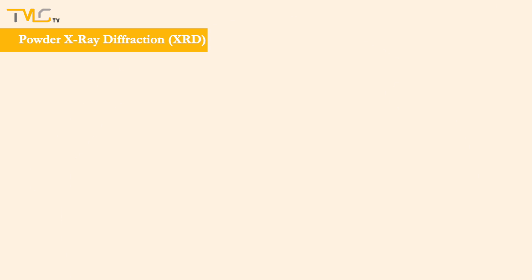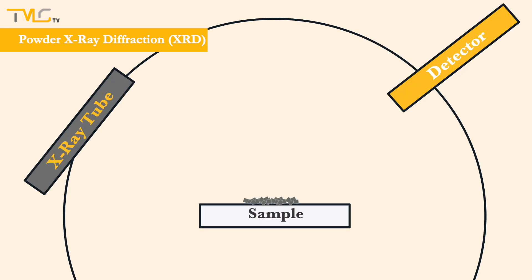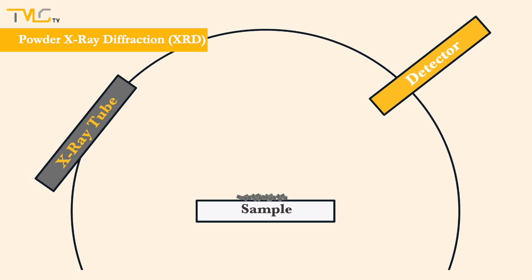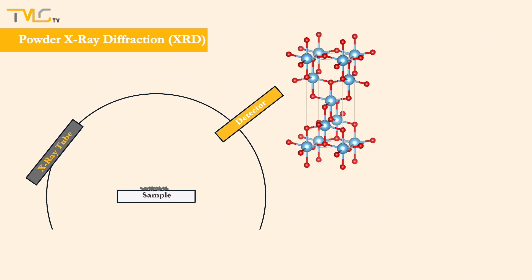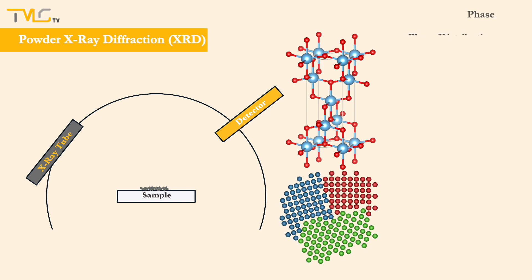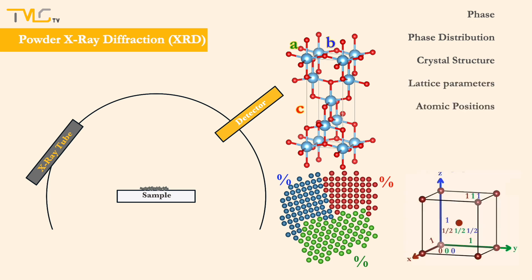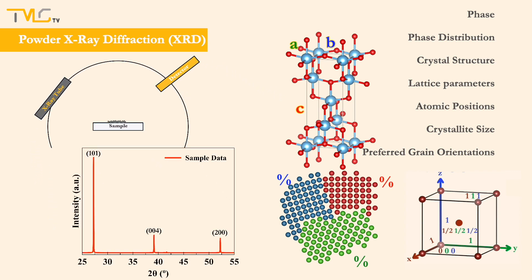Powder X-ray diffraction is a non-destructive characterization technique used for structural analysis of materials. Through this technique, we can analyze the present phases and their percent distribution, crystal structures, lattice parameters, microstrains, positions of atoms in the unit cell, the average crystallite size, and preferred grain orientations of our specimen. These are just some of the commonly calculated structural properties. Please leave a comment below if you are using X-rays for applications other than powder X-ray.